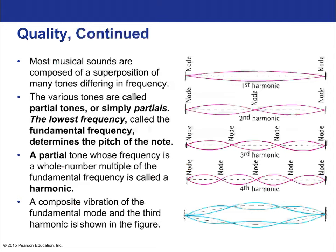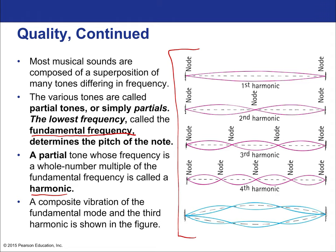Most musical sounds are composed of the superposition of many tones differing in frequency. The various tones are called partial tones, or simply partials. The lowest frequency, called the fundamental frequency, determines the pitch of the note. A partial tone whose frequency is a whole-number multiple of the fundamental frequency is called a harmonic. This is also related to standing waves — the key term from two chapters ago in chapter 19.